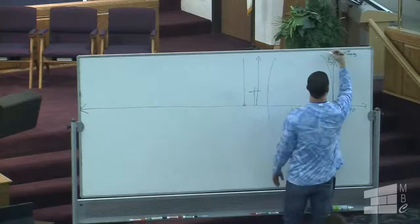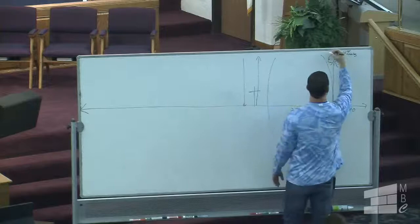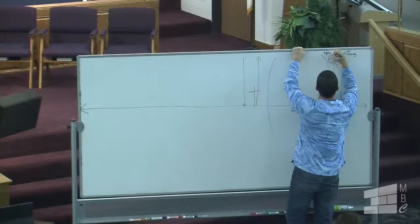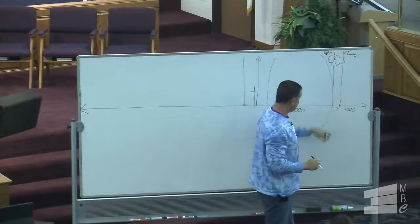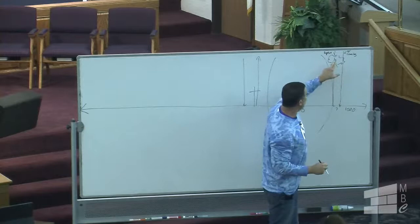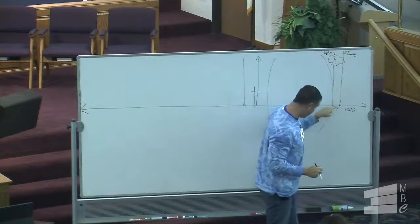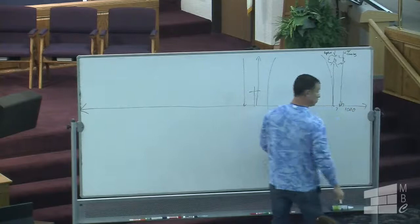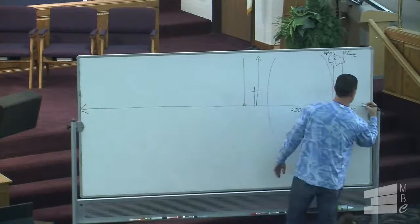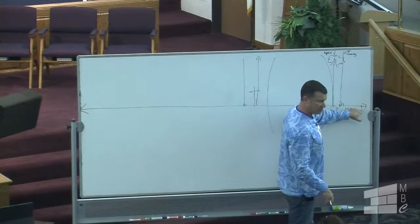There are lots of people that get the rapture and the second coming mixed up, or they take the two and put them together. At the rapture we go up and the Lord comes here — we meet him in the clouds. At the second coming, the Bible says specifically he comes to the earth. We put another throne there, because that represents him setting up his kingdom upon the earth. Then at the end of the thousand years, several events take place.